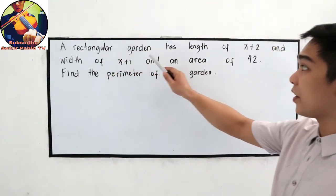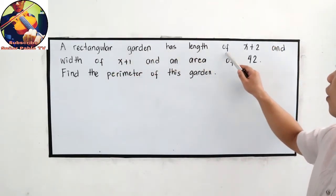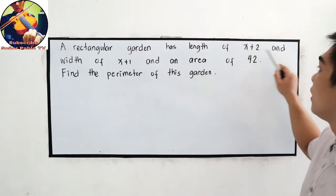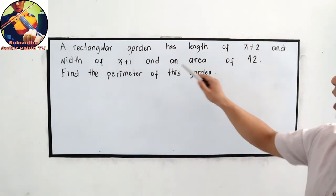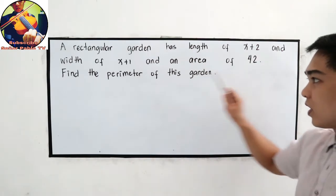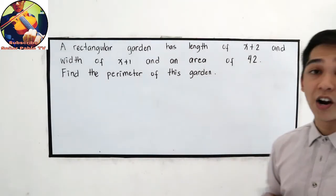A rectangular garden has a length of x plus 2 and a width of x plus 1, and an area of 42. Find the perimeter of this garden.